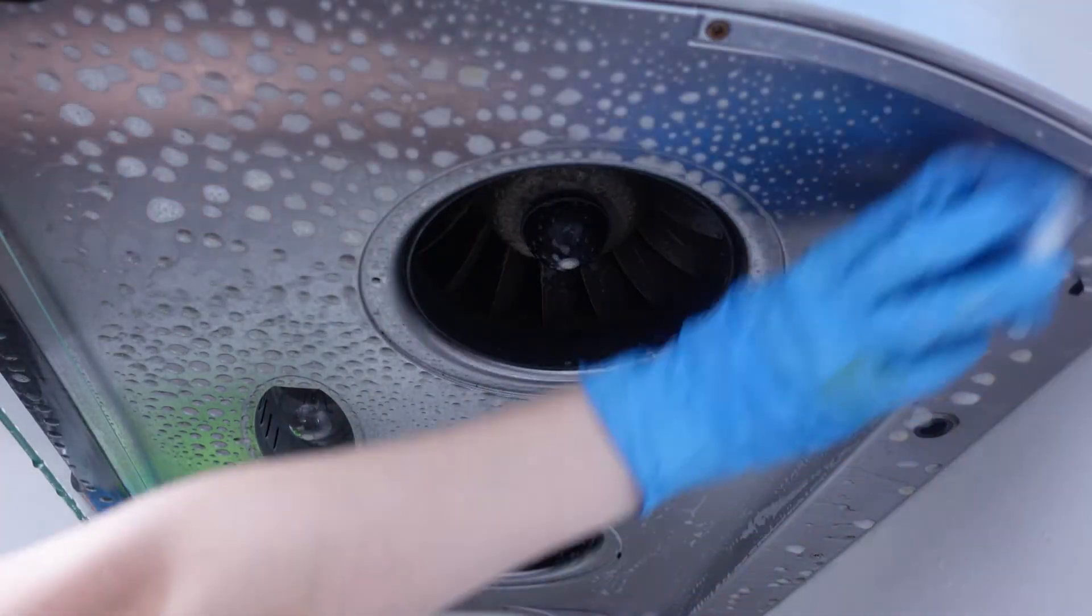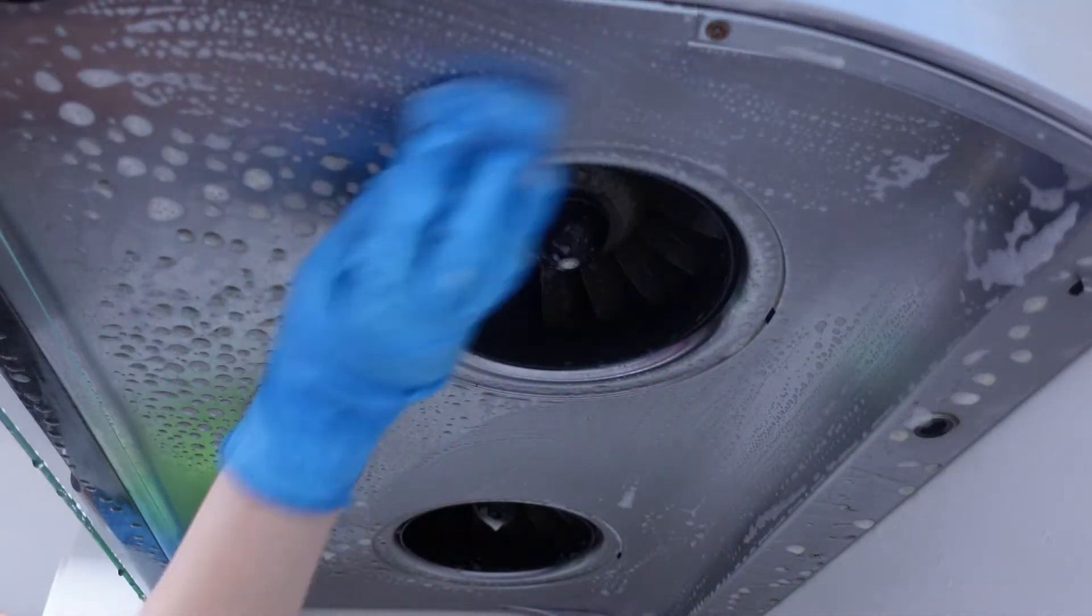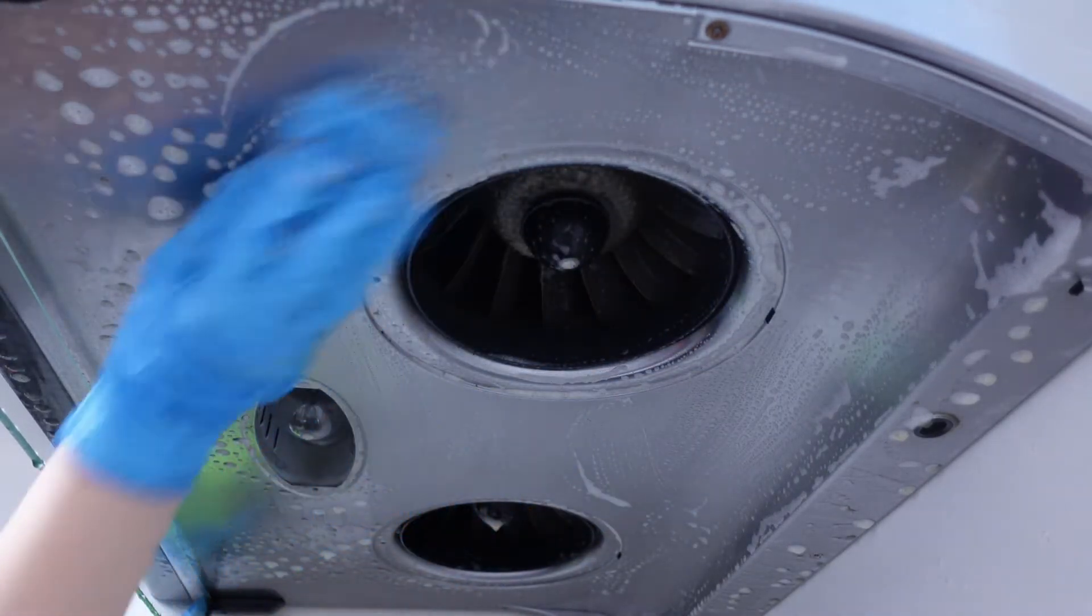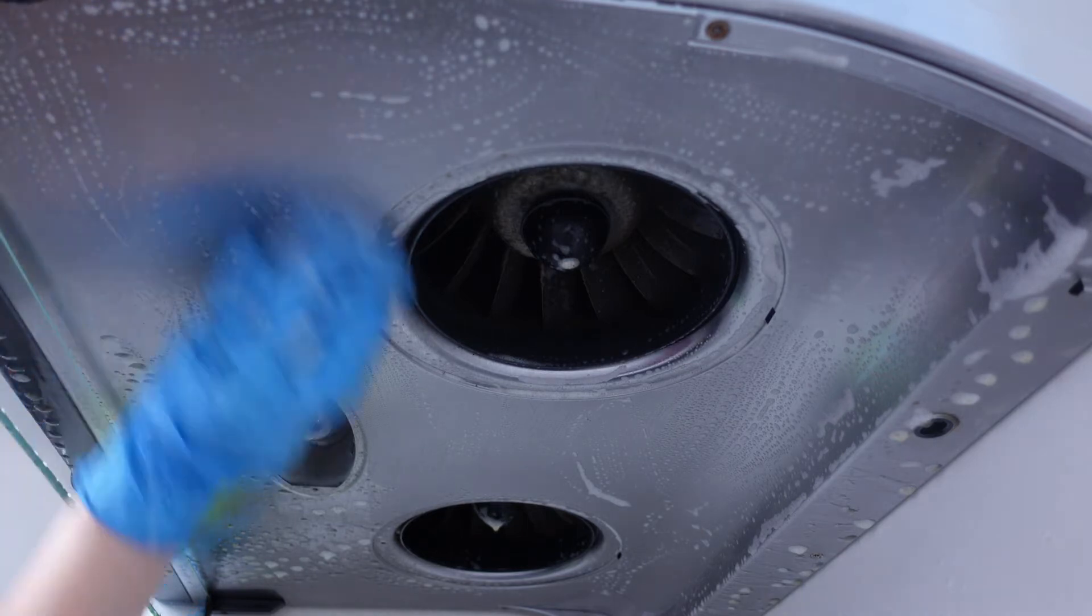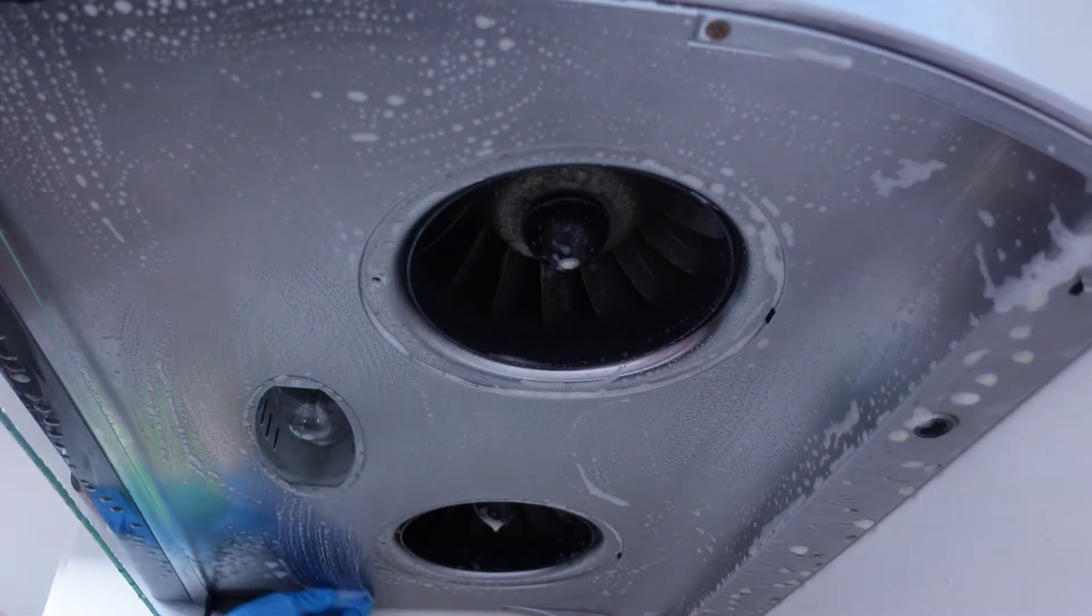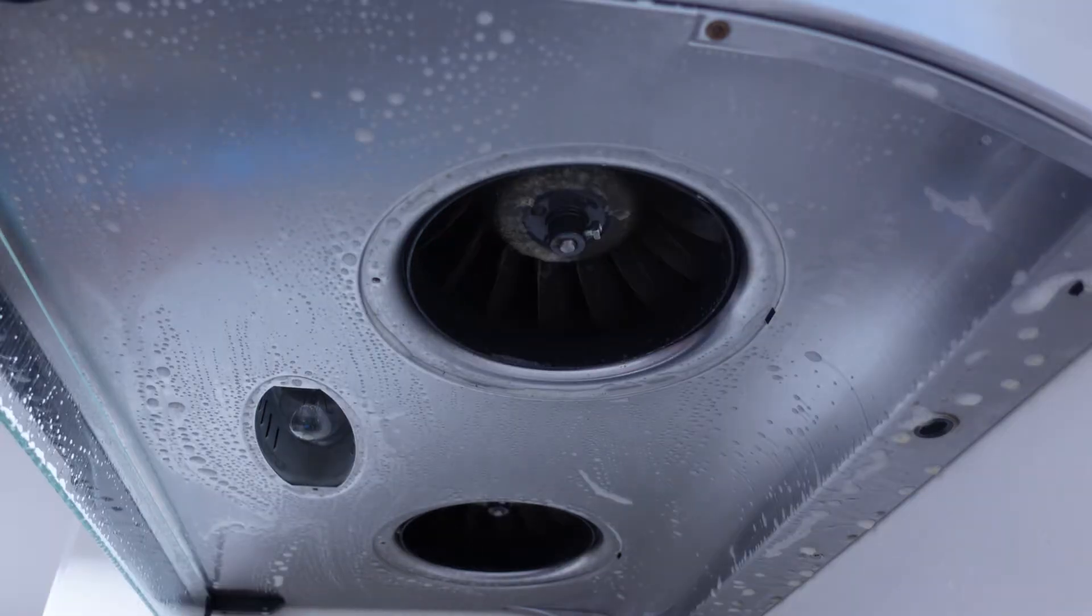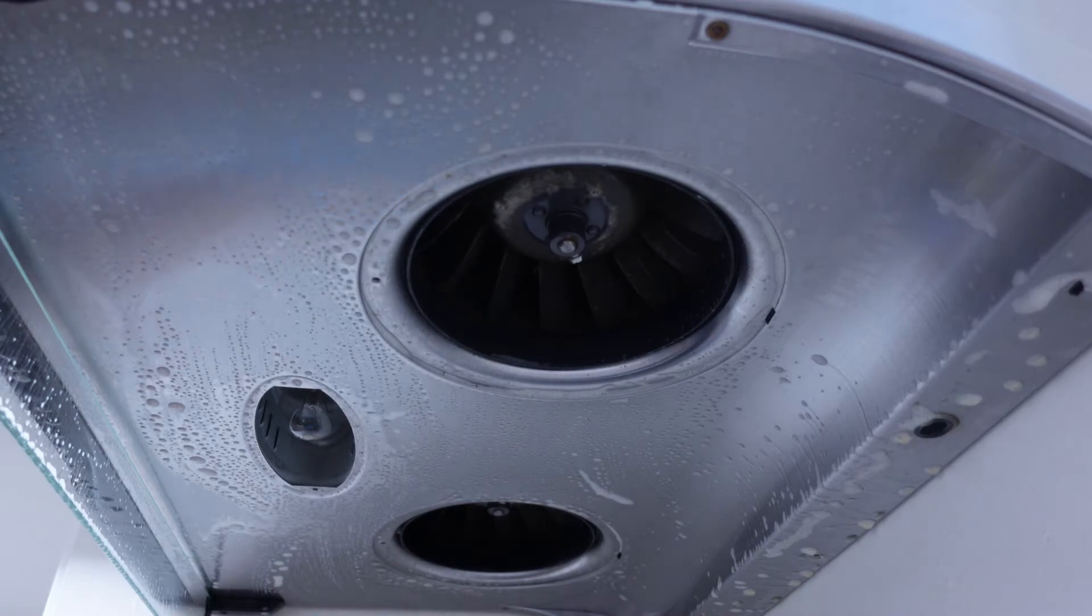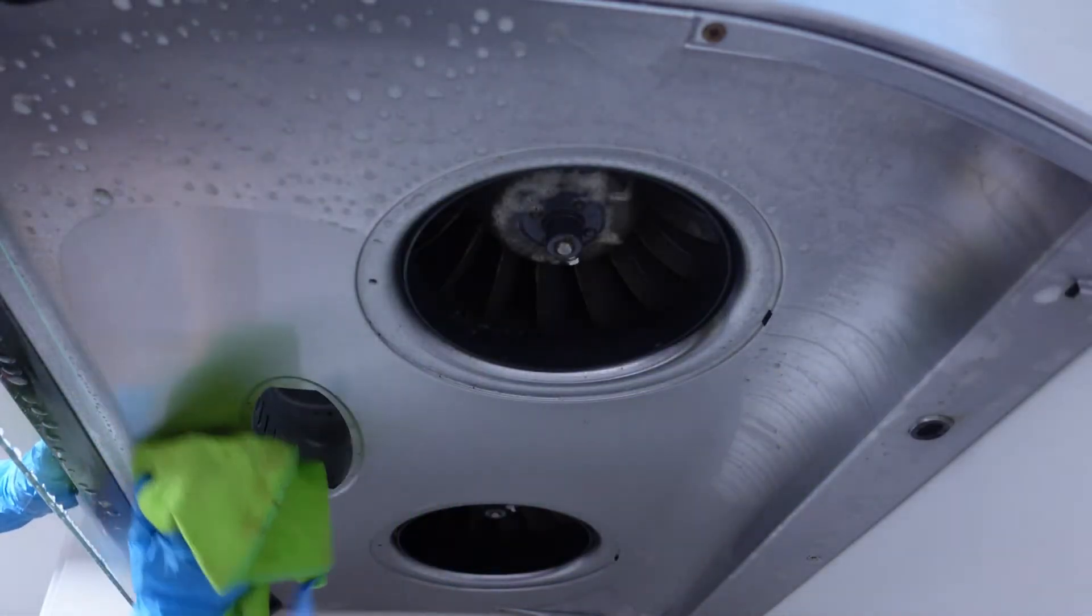After a few minutes, use a sponge to scrub the entire surface of your range hood. You might want to use a brush for detailing. Lastly, grab a microfiber cloth and wipe.